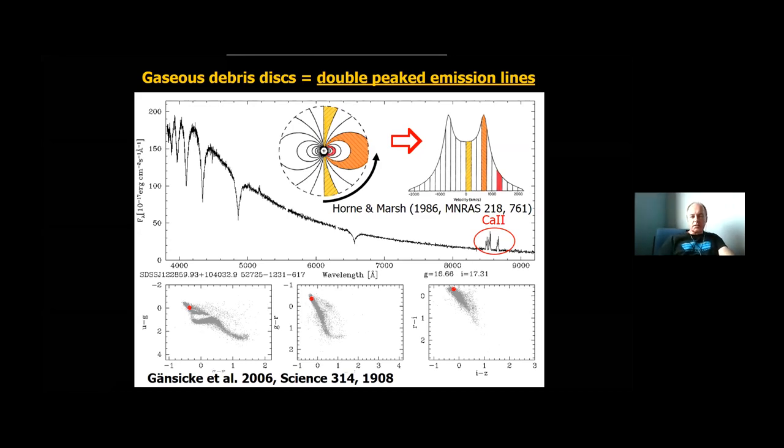So we detect gas disks and they're very, very few of them, just kind of a handful, through double peak emission lines, usually calcium triplet over here, but sometimes iron also magnesium. And that gas comes from shredded solid planetesimals. And double peak line profiles are the signature of a Keplerian rotating gas disk because you have material that is both at the same time blue shifted and red shifted on each side of the disk toward you. So if you see a double peak line profile, you know that you're looking at a gas disk.